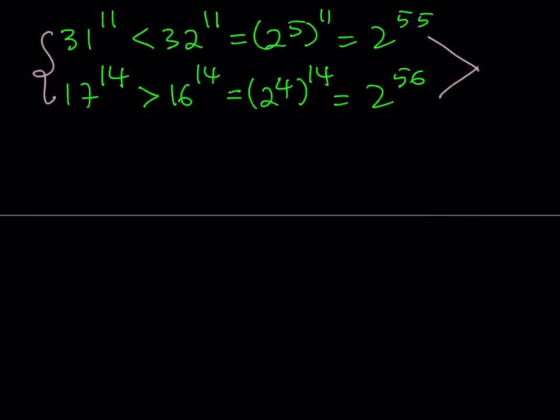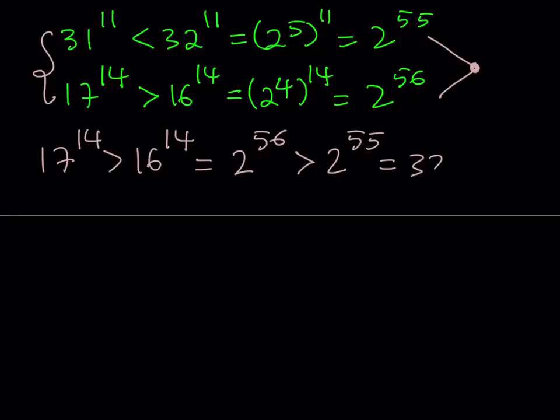Now, how can I put this together? Well, I can say that 17, let's start with 17 this time. 17 to the 14th power is obviously greater than 16 to the 14th power, which can be written as 2 to the power of 56. And obviously, 2 to the 56, notice that we're comparing powers of 2, is greater than 2 to the 55th power, which is obviously equal to 32 to the 11th power, which is greater than 31 to the 11th power. And isn't this awesome? I think this is awesome. So by using powers of 2 in the middle, we're able to compare 17, a power of 17 and a power of 31.